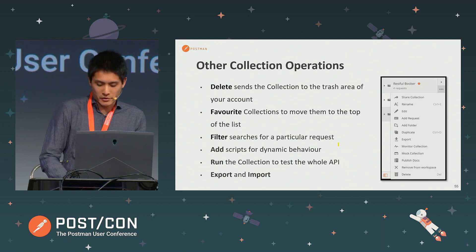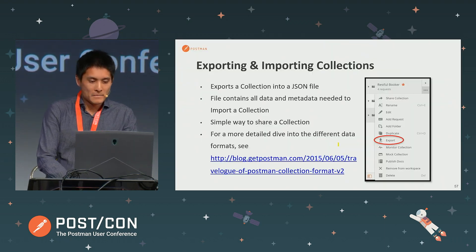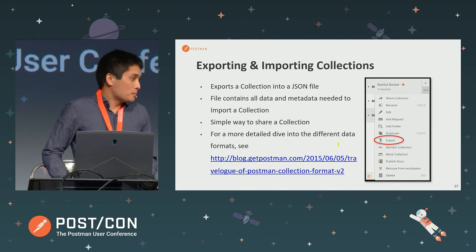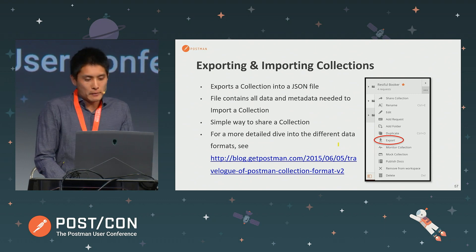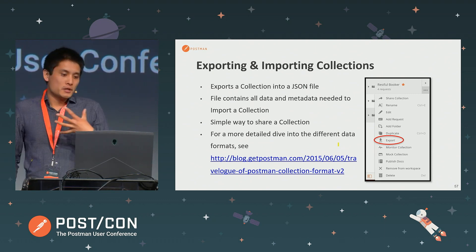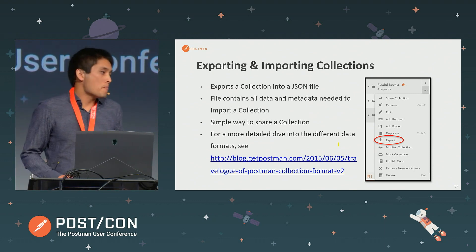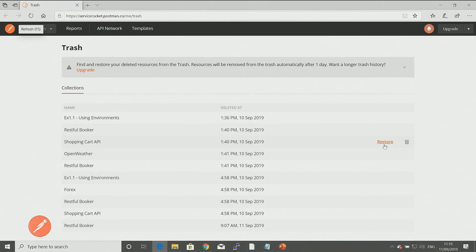These are some of the other operations. With exporting, you can export a collection to a JSON file. This file has all of the data and metadata needed to import a collection. So you could export your collection, give it to your team, and they can import it — that's a simple way of sharing a collection. Here's my trash area with all these collections, and I can restore a collection or permanently delete it from here.